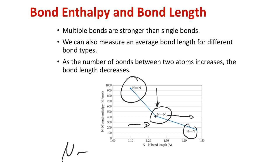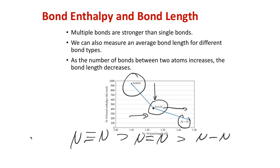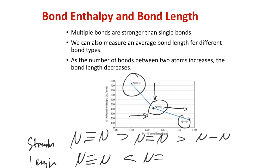In terms of length, this trend goes the opposite way: the N≡N triple bond is shorter than the N=N double bond, which is shorter than the N-N single bond. Fewer bonding pairs of electrons lengthens the bond, which also weakens it. Triple bonds are stronger and shorter; single bonds are weaker and longer.